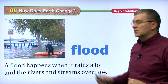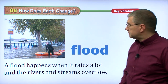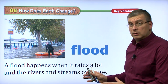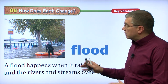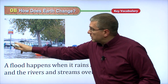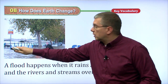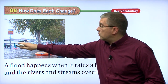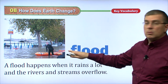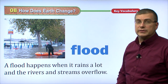One of those big changes, of course, is a flood. When it rains a lot, the rivers, lakes, and other bodies of water will get so much water, they'll come up and they will flood the surrounding areas.